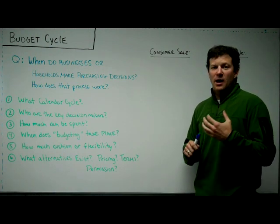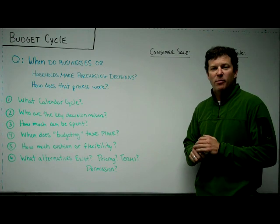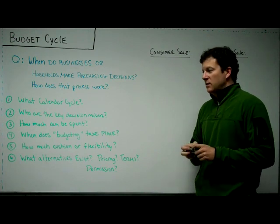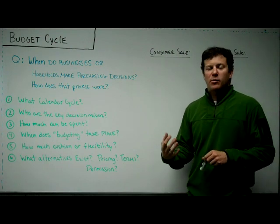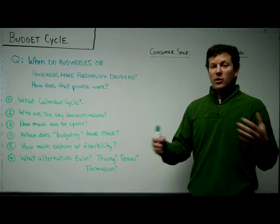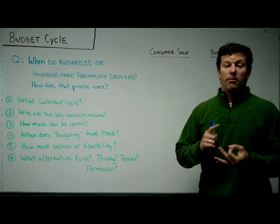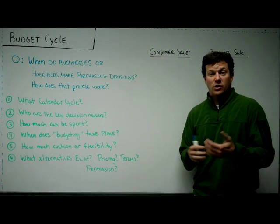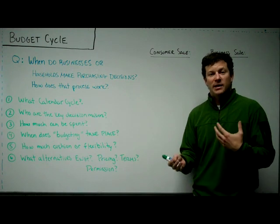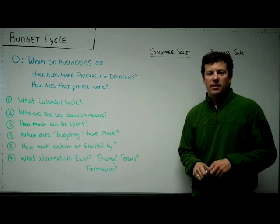Most businesses and most households have a budget or budget process. It doesn't mean they don't violate that. It means they go through a rudimentary planning process where they say, over the next period of time - quarter, year, month - this is how much money I have to spend, and these are the things I'm going to try and spend it on. They try and set limits or parameters to guide their spending behavior.